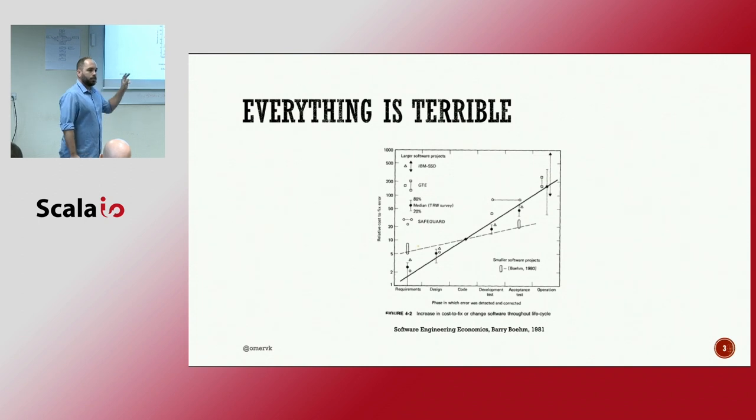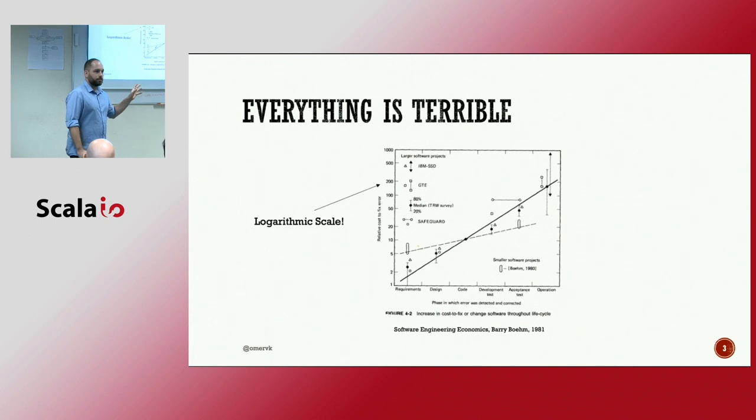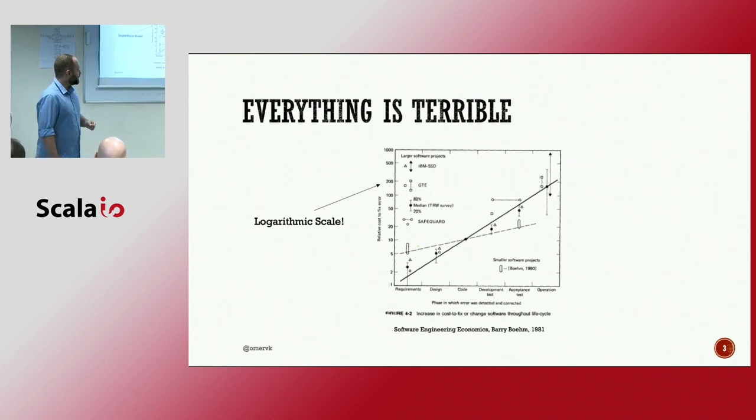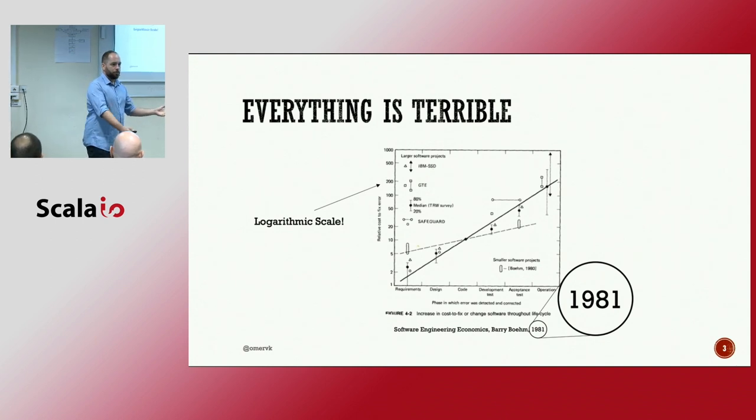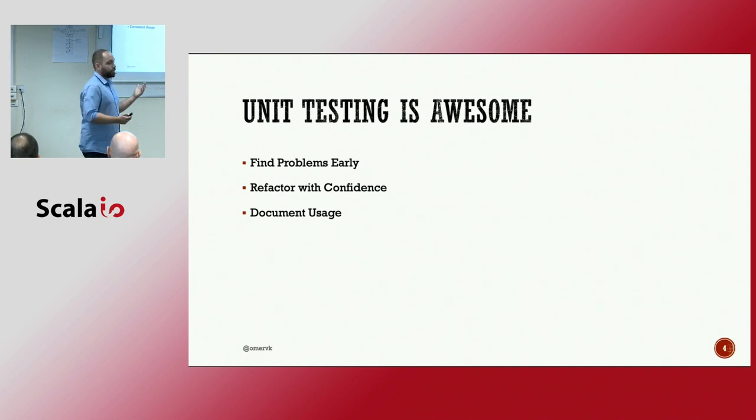But I want to point out a couple things here about this graph. One is that it's logarithmic scale. So the graph is a logarithmic graph. And the other thing I want you to notice is that this is from 1981. So this has been known for a while now. But this is a solved issue, right? We've solved this. We've pushed a lot of the checks back because we have unit testing.